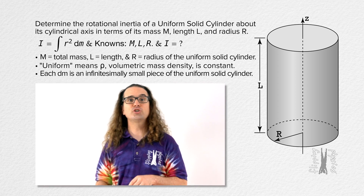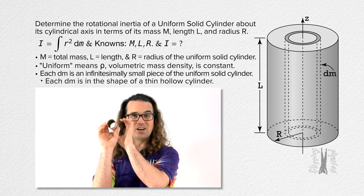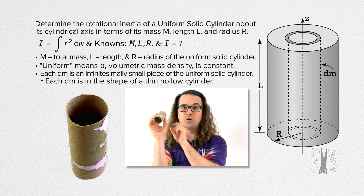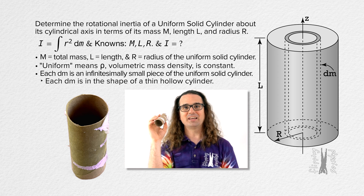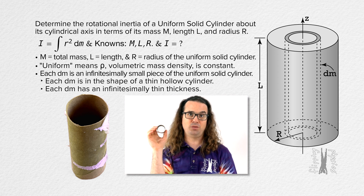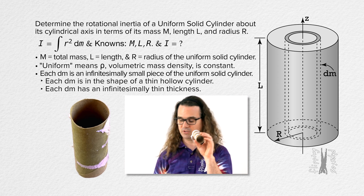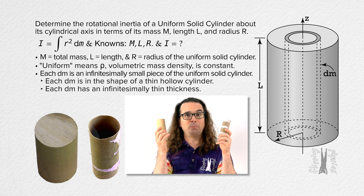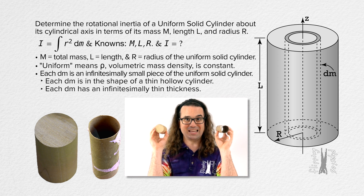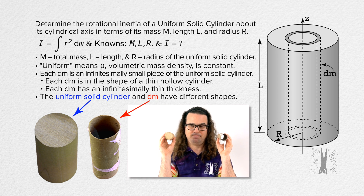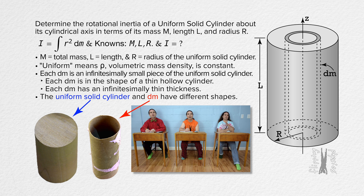Now we identify the infinitesimally small pieces dm of our uniform solid cylinder. They are in the shape of a thin hollow cylinder — in other words, each dm is in the shape of a hollow cardboard cylinder like a toilet paper holder, only the thickness of the cardboard is infinitesimally thin. Please notice the difference between the shapes of the two objects: the uniform solid cylinder and the infinitesimally small pieces dm.